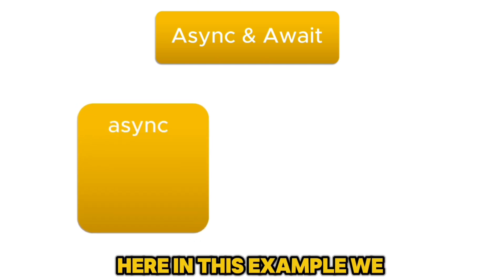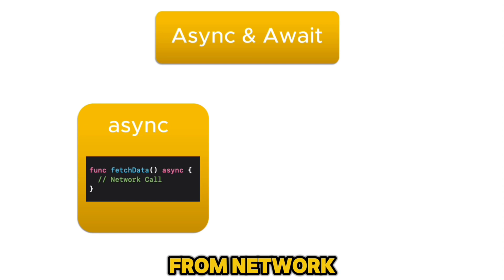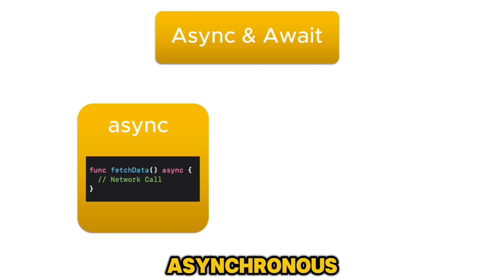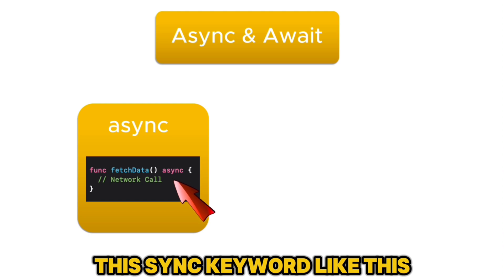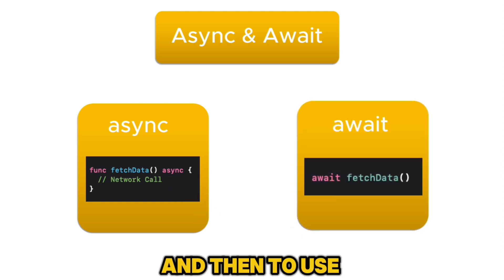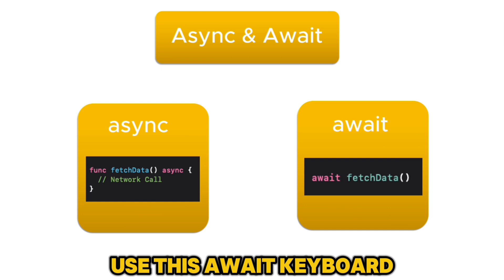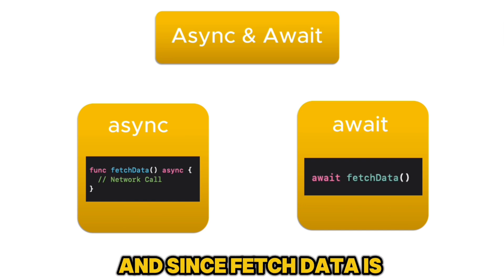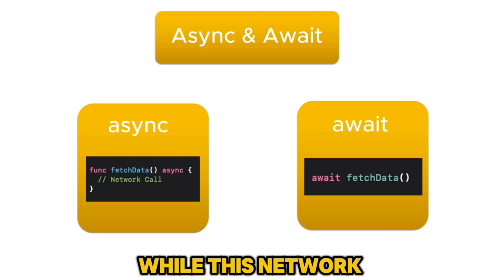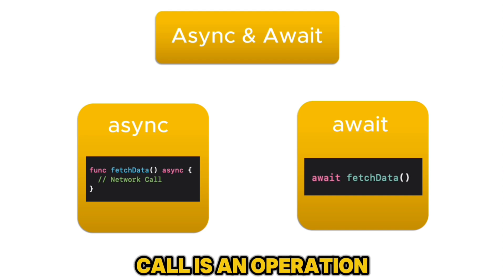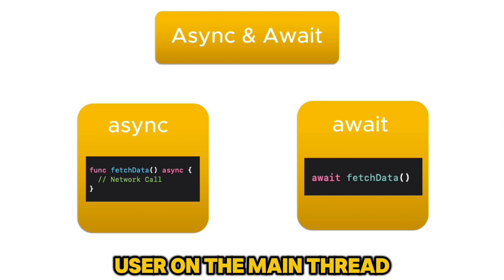Here in this example, we have this function fetch data, which fetches data from the network. And to make it asynchronous, all we need to do is use this async keyword like this. And then to use this function, all we need to do is use the await keyword. And since fetch data is an asynchronous function, while this network call is in operation, we can show a loader or something else to our user on the main thread.